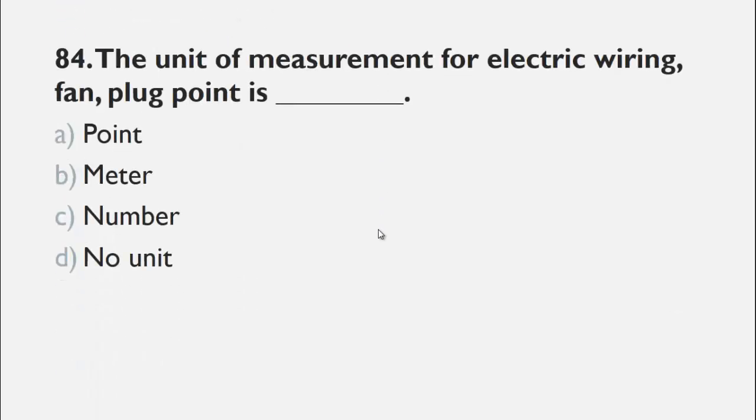MCQs number 84 is, the unit of measurement for electric wiring, fan, plug point is a point, b meter, c number, and d no unit. The electric wiring, fan, and plug point are generally measured in points. So, the right choice for this question is a point.